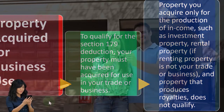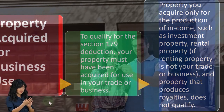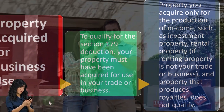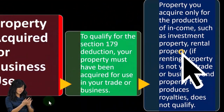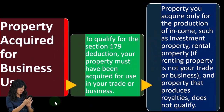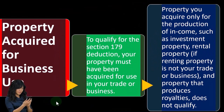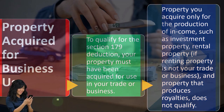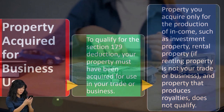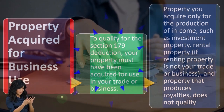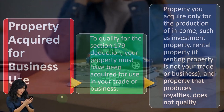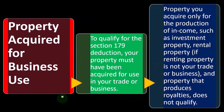Property you acquired only for the production of income — such as investment property, rental property if renting is not your trade or business, and property that produces royalties — does not qualify. The idea is whether you're just holding property that's going to appreciate in value, or whether you're actively involved in it. This distinction is one of the issues that comes up with some of the rules being applied.